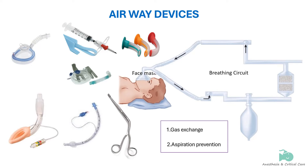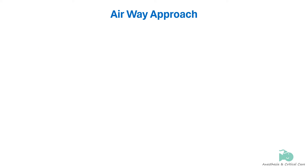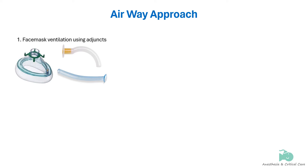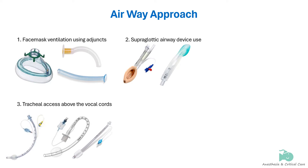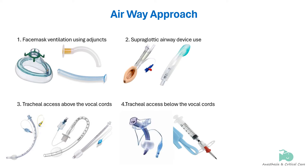This requires safe, effective, and reliable use of equipment alone or often in combination. The approaches to airway management in which equipment is used are usually in order of: face mask ventilation using adjuncts, supraglottic airway device use, tracheal access above the vocal cords or endotracheal intubation, and tracheal access below the vocal cords which includes tracheostomy and cricothyroidotomy.